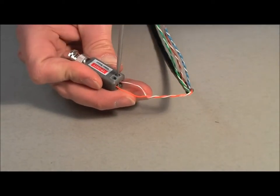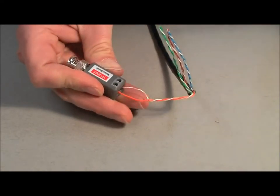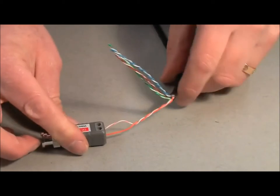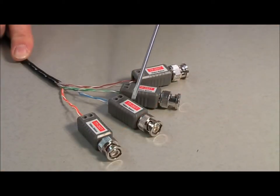And at the DVR end you'd repeat the process on the second balun and that would plug into the DVR recorder. Each Cat5 cable is capable of supporting four video signals.